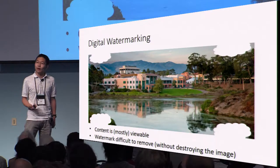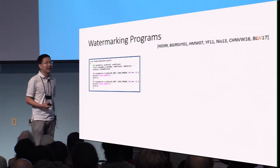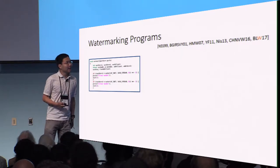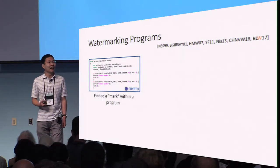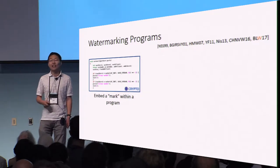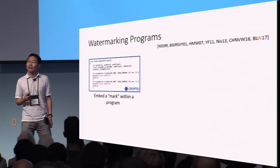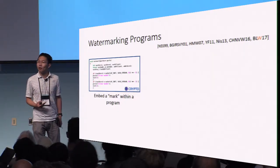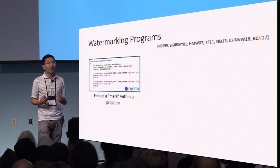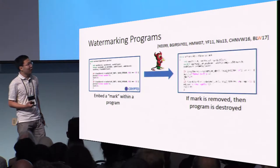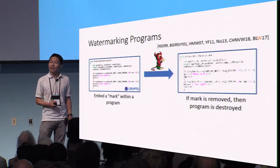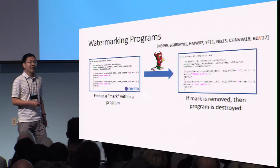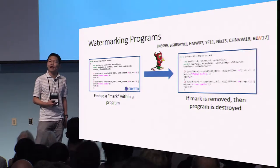Just as we can define watermarking for images, we can also consider watermarking for pieces of software or pieces of code. Here the input is a description of a program, and our objective is to embed a watermark within that program. This could take the form of a product ID, a manufacturer's name, or the licensee's name. After the watermark has been embedded inside the program, the program should still be executable — you should still be able to run the program on inputs of your choosing. Moreover, the security requirement basically says that if an adversary comes along and gets a hold of your watermarked program, they should not be able to remove the watermark without essentially destroying the functionality of that program.